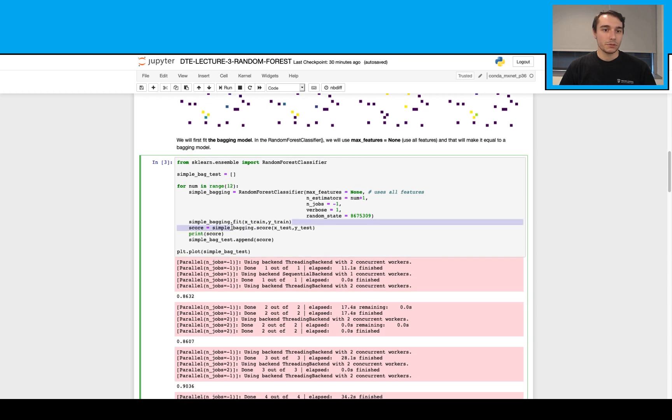And my simple bagging model is created like this. Then I will fit this with my training data, and I will receive the prediction scores from the test data like this. Then for each of these, I'm also going to print my score.